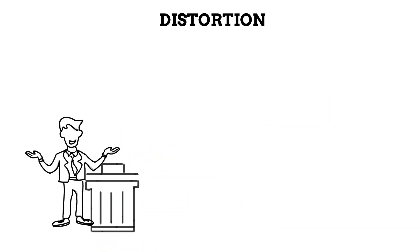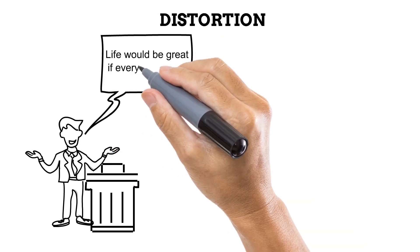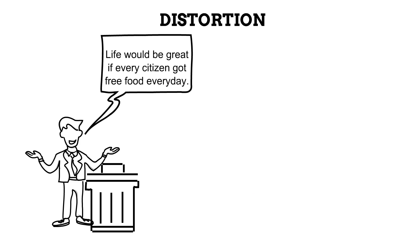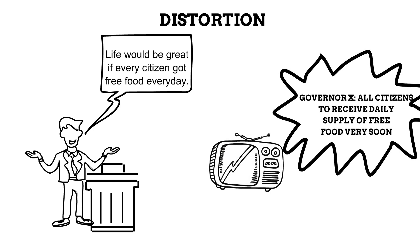Let us start out with a little scenario. Imagine there is a governor of a certain state, Governor X. Towards the end of one of his press conferences, he made a very interesting statement: 'Life would be great if every citizen got free food every day.' Now this is quite an interesting thought — who doesn't like free food? But you would agree with me that it was just a thought, the governor simply thinking out loud. What if the very next day, the headlines read, 'Governor X says all citizens are to receive a daily supply of free food very soon.' While this might sound nice, it is not true of what the governor said. It is a misrepresentation of the truth. It is a distortion.